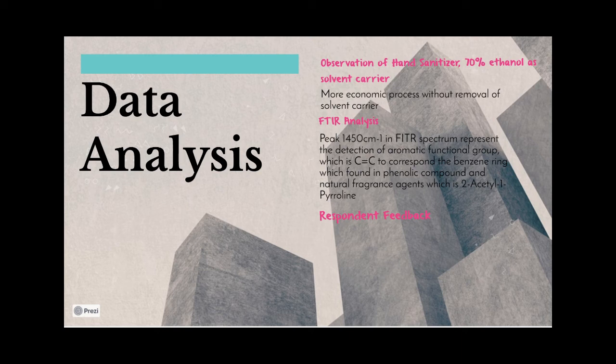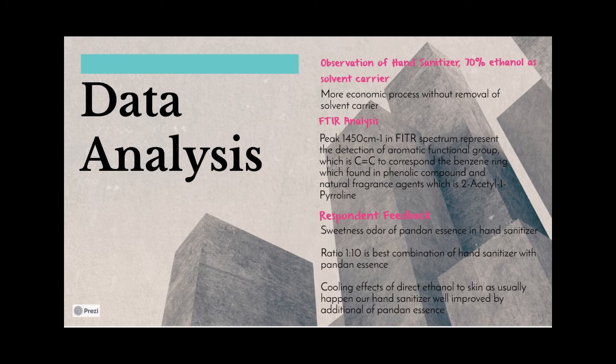For respondent feedback, JKPK staffs acts as respondent feedback in this project. They informed that the extraction of pandan essence significantly improved the chemical smell of hand sanitizer to sweetness of pandan essence. Besides, they also feedback the ratio 1 to 10 is best combination as hand sanitizer with essence pandan.